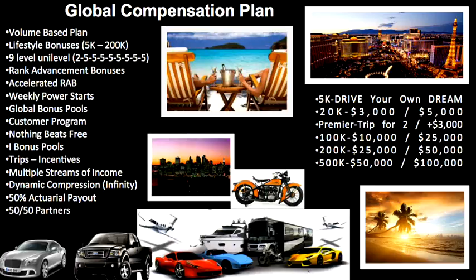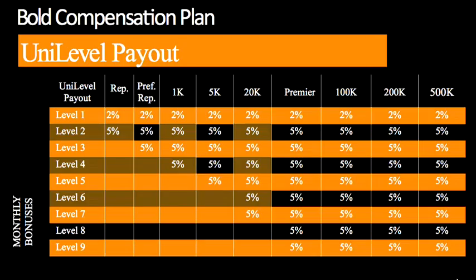Then we talk about our compensation plan. There are really a lot of amazing bonuses — the Drive Your Own Dream and rank advancement bonuses, actually a couple hundred thousand dollars of bonuses you can qualify for. We talk about bonus pools. But we don't go into the details of the compensation plan — we just want them to understand there's a lot of money. I like to focus on the unilevel, because this is my residual income. If I build three teams who build three teams, this is where I get my duplication, where I'm leveraging myself, where we all do a little and it adds up to a lot.